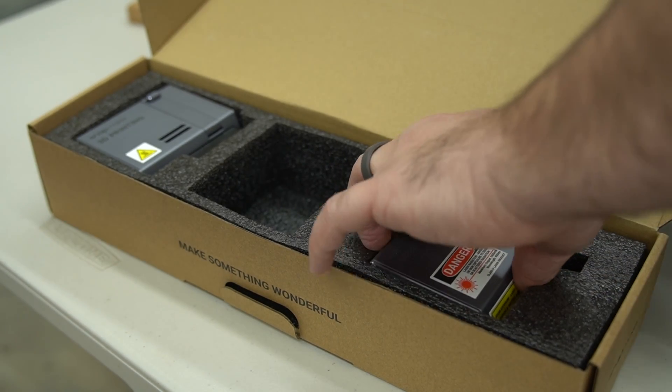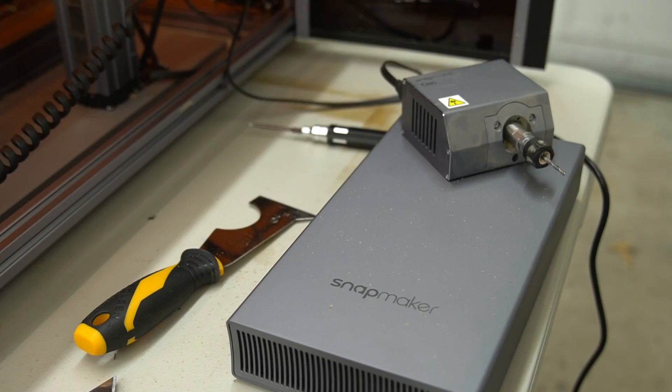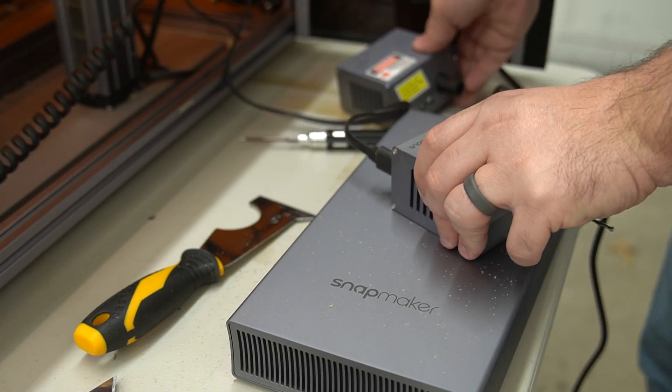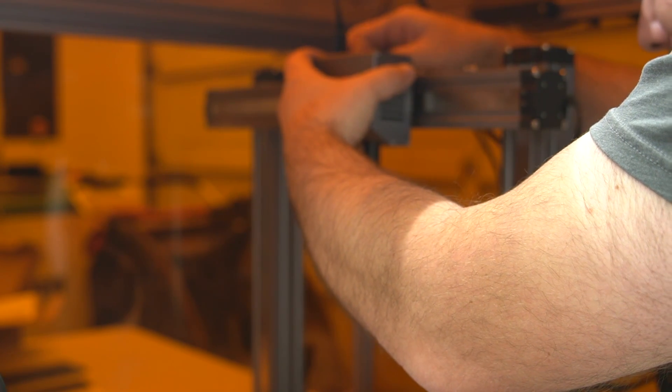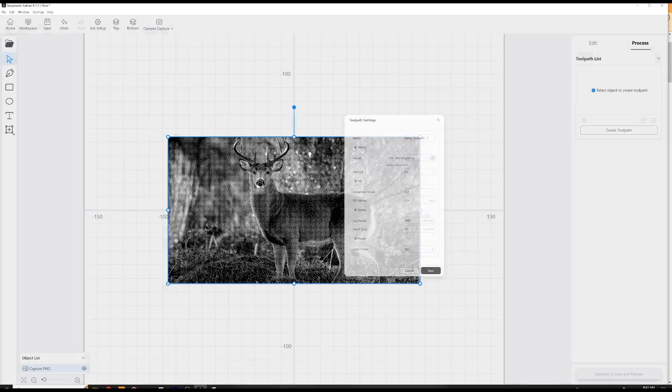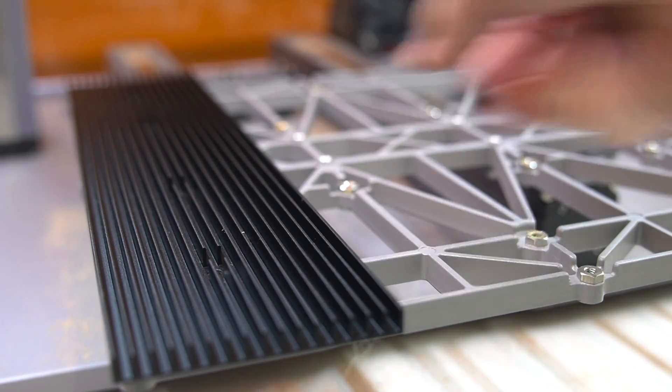So now let's turn our attention to laser engraving. I've gone ahead and switched over from the CNC router module to the laser module. It took me about five or ten minutes to switch it over. I prepared this simple design to engrave on the same piece of cherry wood, just on the backside.